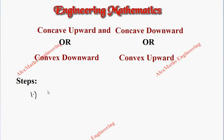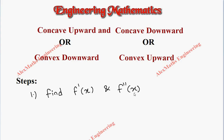In the first step, for the given function we have to find its first derivative f'(x) and its second derivative f''(x). In the second step, we have to equate f''(x) to zero, and then we get the x values.